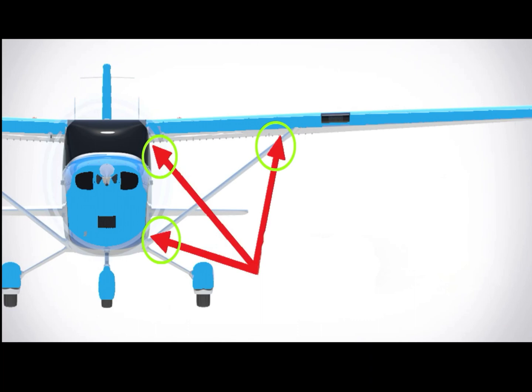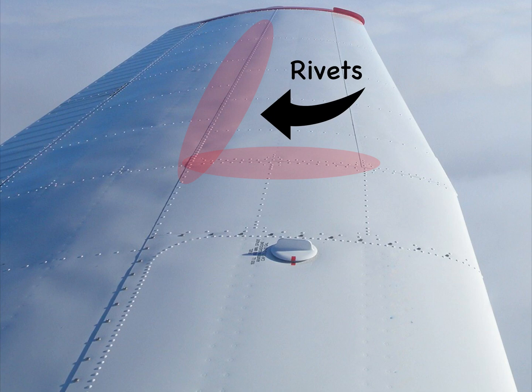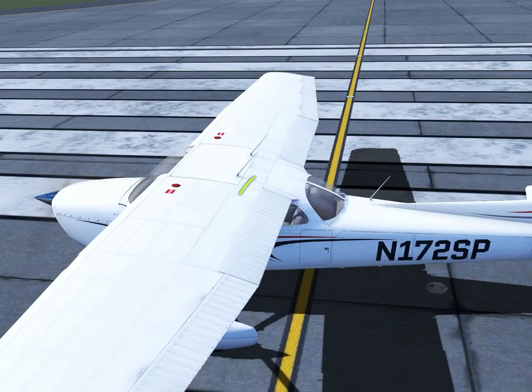Skin friction drag is the result of the aircraft surface being rough and not smooth. Air molecules give up some of their kinetic energy as they contact the skin surfaces of the airplane. Rivets found on the fuselage generate friction with the air flowing over the wing, as well as the ridges used to reinforce the flight controls.